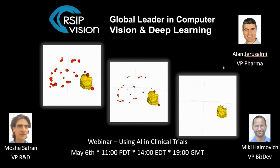Hello, everyone. Thank you for joining us. My name is Miki Chaimovic. I'm VP Business Development with RSIP Vision, a global leader in computer vision and deep learning. For this webinar, I will be hosting Moshe Zafran, our VP R&D.